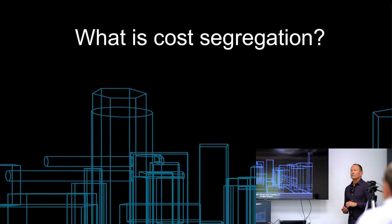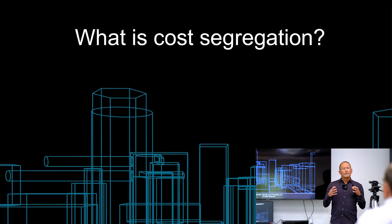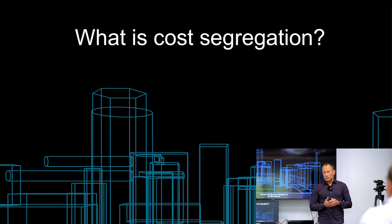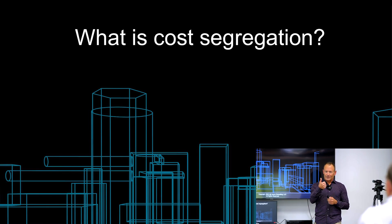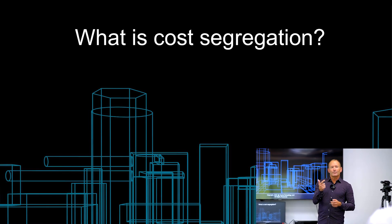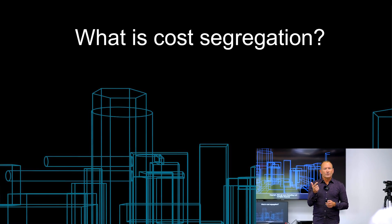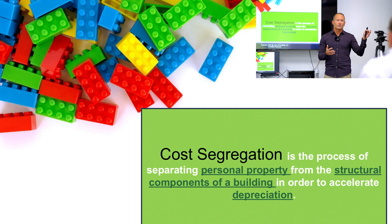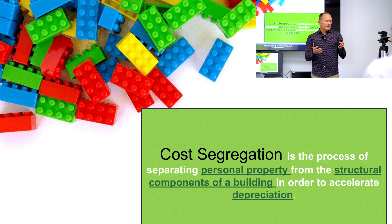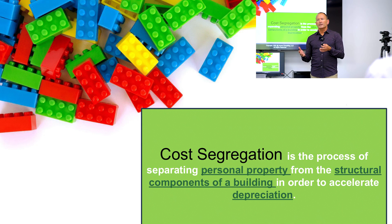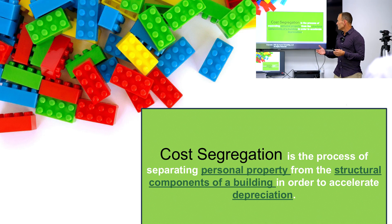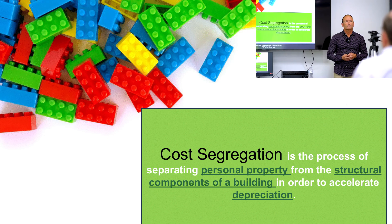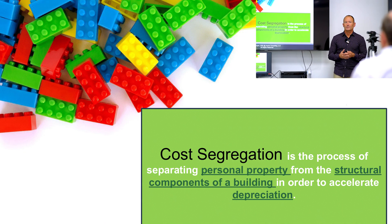Let's define cost segregation. When we think of a building or a property, there are really three pieces: the land, the building, and then a lot of other stuff we call personal property — your furniture, flooring, carpet, all the little things in every building that won't last the length of the building itself. What cost segregation allows us to do is separate personal property from the building. That's my 30 seconds — that's cost seg.